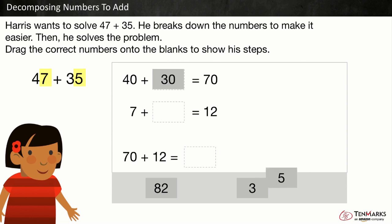We can drag the 5 here since seven ones from 47 is being added to the five ones from 35. This totals 12.